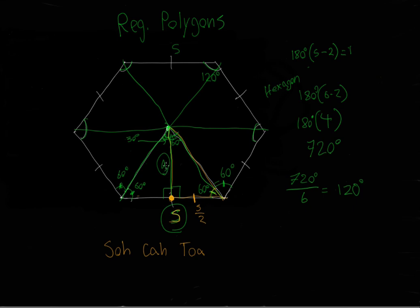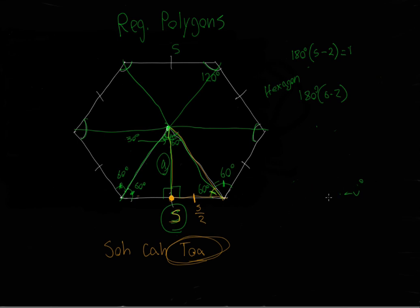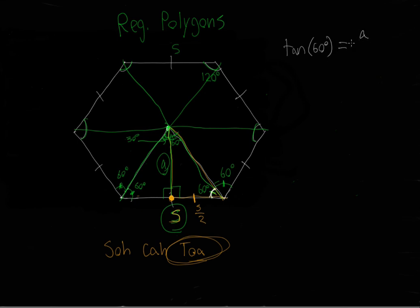We want to know the opposite side (a) and we know the adjacent side (s/2). Using SOH-CAH-TOA, since we know opposite and adjacent, we use the tangent function — that's the TOA part, which relates the opposite side and adjacent side. So we'll use the tangent of the 60-degree angle.